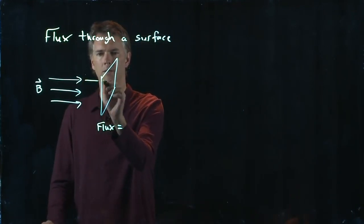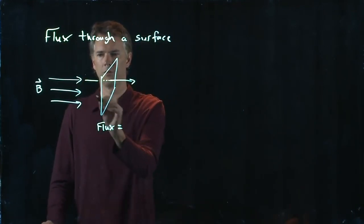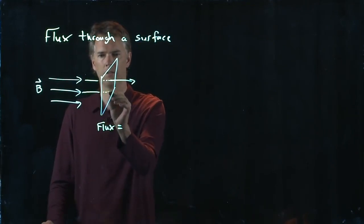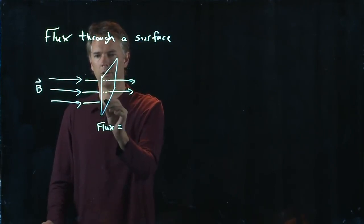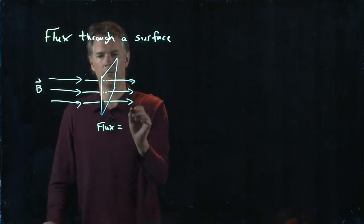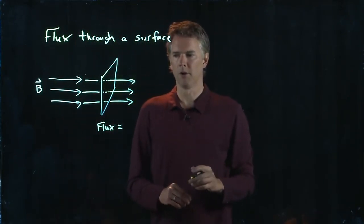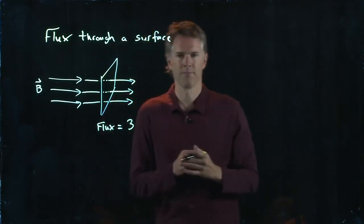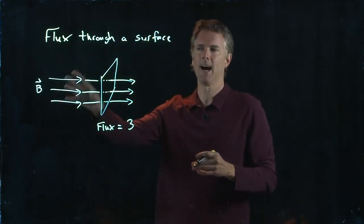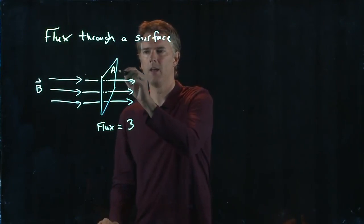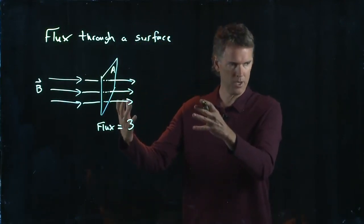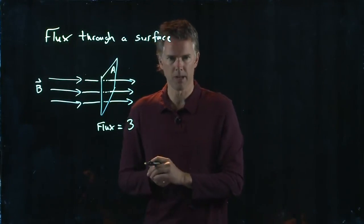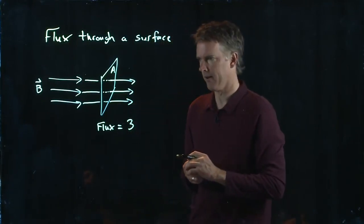Well, here comes one line, goes through the surface. Here comes another line, goes through the surface. Here comes another line, and it goes through the surface. So we would say, what's the flux? It's three. And we know that it's B times the area A, but whatever units you end up with, we can just say that is three. Three lines of B are going through that area.